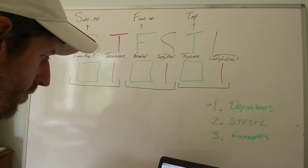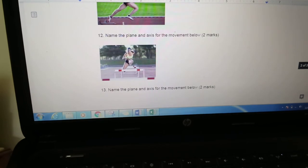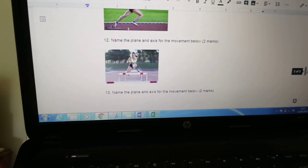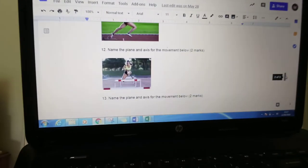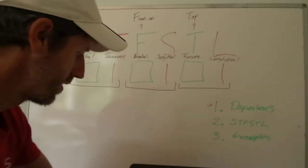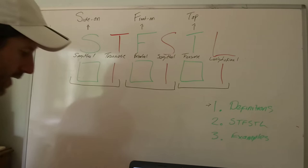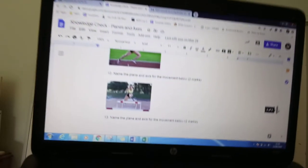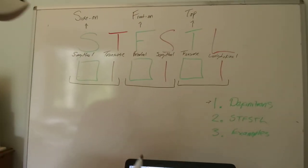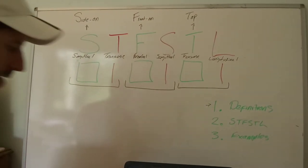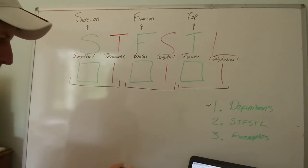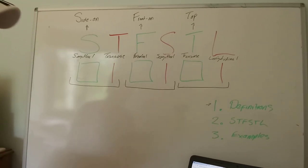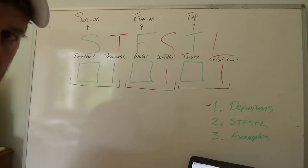Trick questions are going to come up. For example, you've got the hurdler. It says: what's the plane and what's the axis? The plane you're looking at is front on — it's a picture taken from front on, so it's a frontal plane. But the movement occurring — which is hip flexion, she's raised the leg up — you can't look at hip flexion from front on. Hip flexion occurs around the transverse axis.